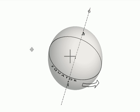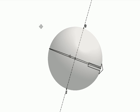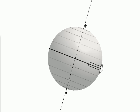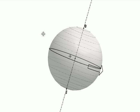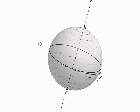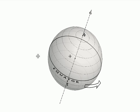Once we have the equator, we can have some more circles which will be in planes parallel to the equator's plane. We will call these circles the latitudes. As you can see, latitudes are not great circles, so they are not of the same size. In fact, they keep shrinking as we go towards the two poles.